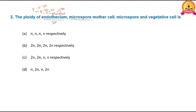The microspore mother cell is also diploid in nature, because each sporogenous cell directly behaves as a microspore mother cell. The sporogenous cell is also a part of the anther. Hence, the microspore mother cell ploidy is diploid.